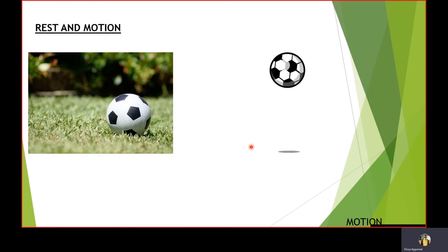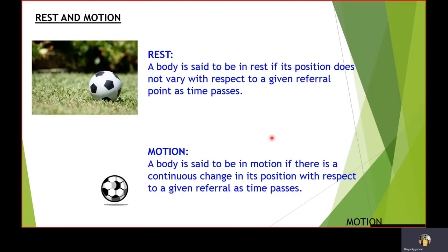So the position of the ball with respect to the grass, with respect to time, is changing. So this ball is said to be at rest at this moment, and this ball is said to be in motion at this moment. The only difference between the two is that there is change in position with respect to time, with respect to a reference point.